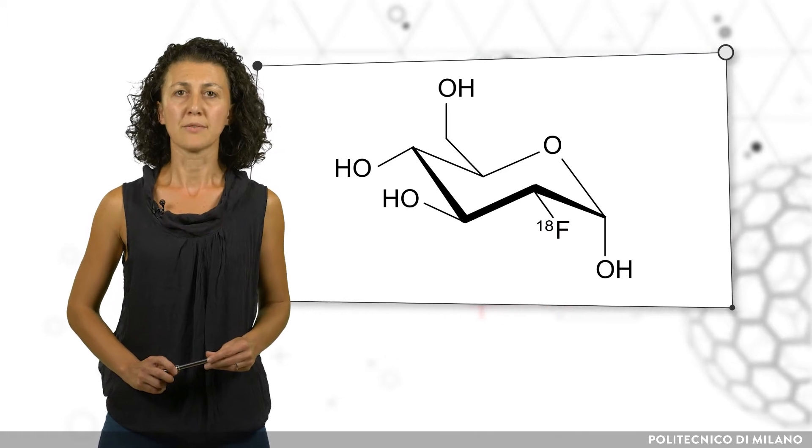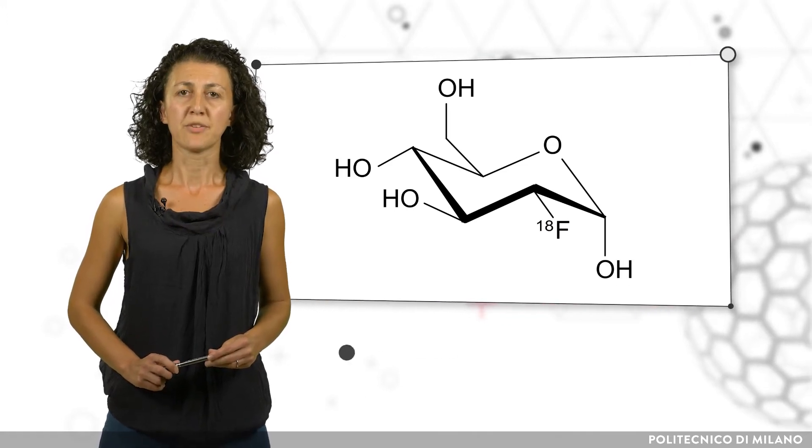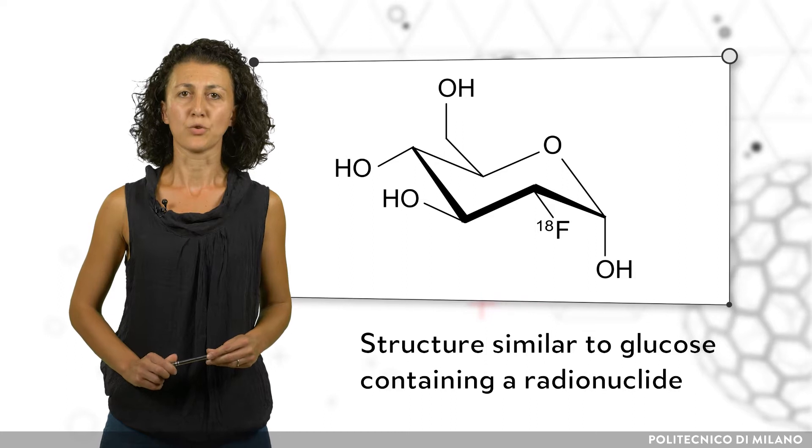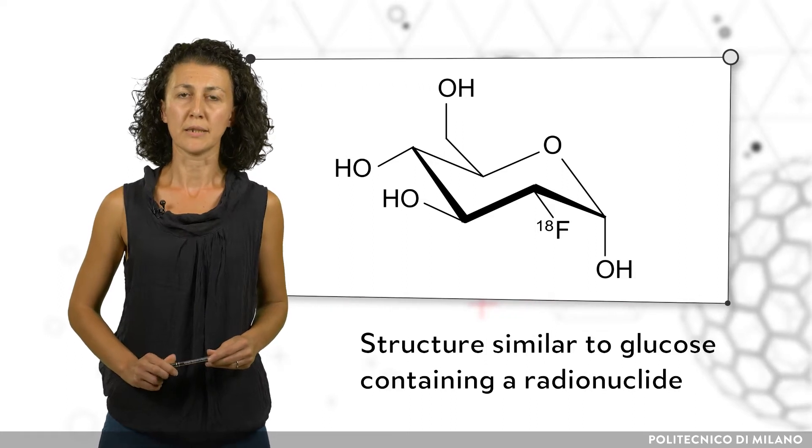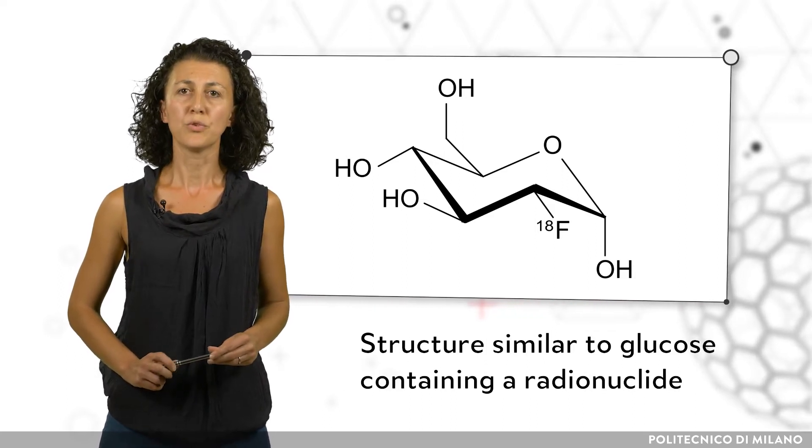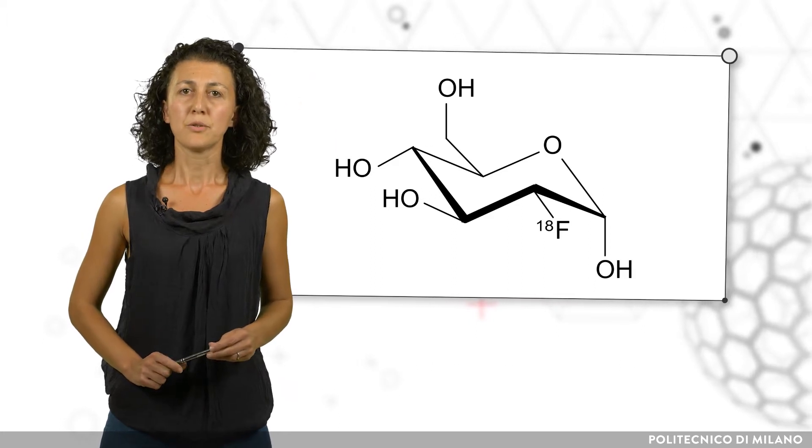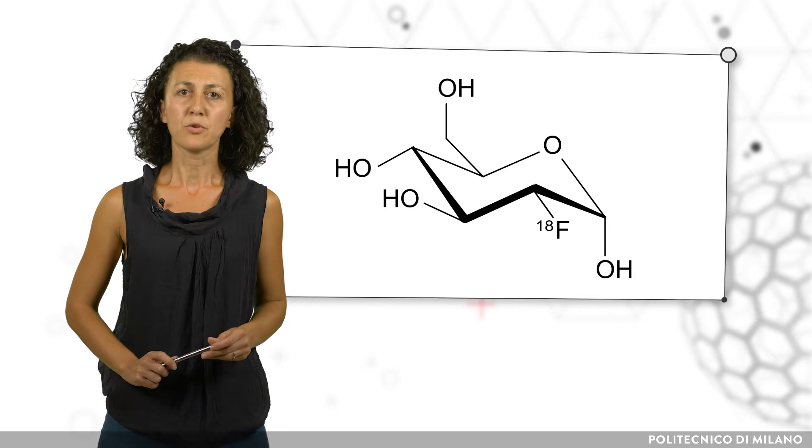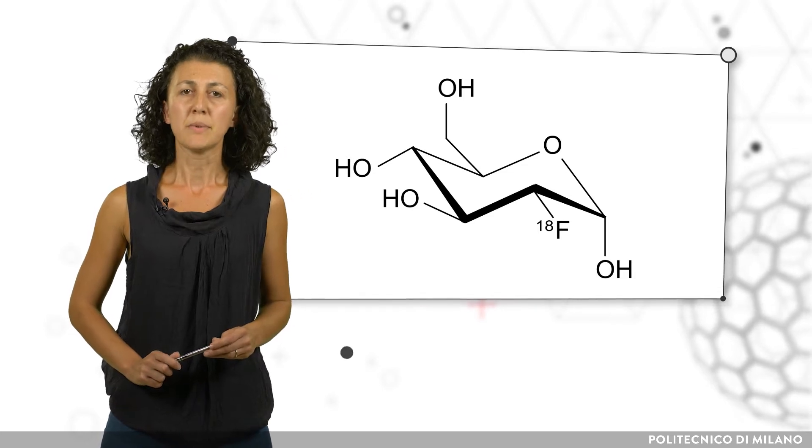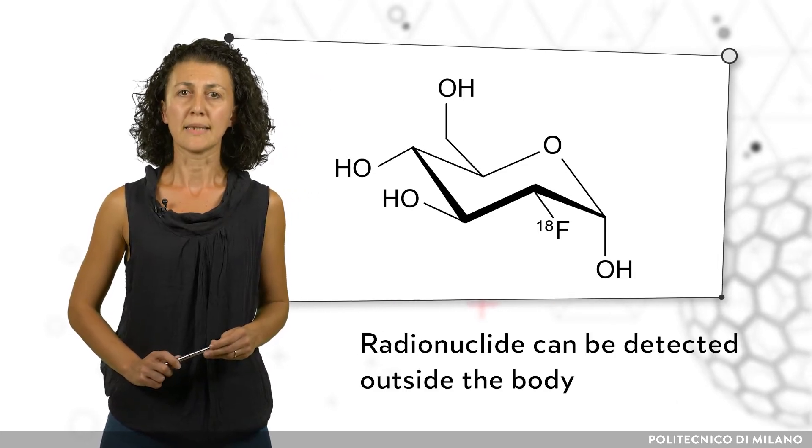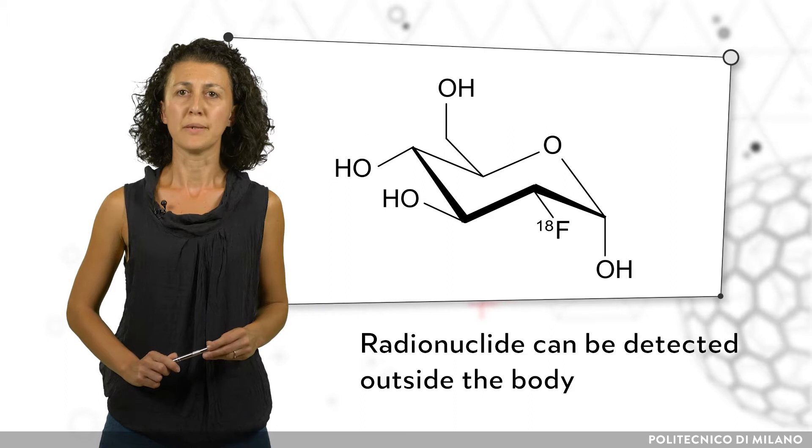Seeing cancer metabolized glucose in excess, a pharmaceutical with a similar structure to glucose but containing a suitable radionuclide was used during the PET scan. The radionuclide is necessary because the radiation it emits can be detected outside the body and can give valuable information about the cancer.